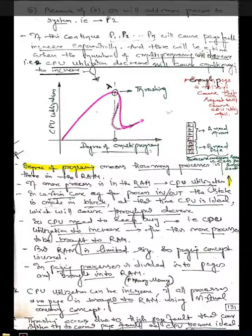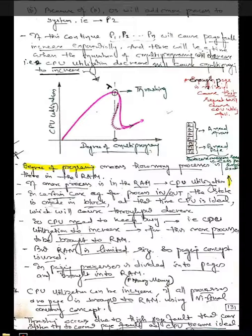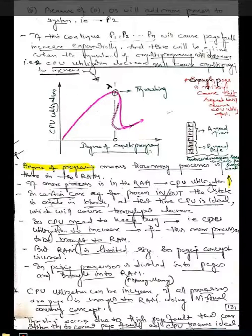As we have discussed in scheduling, how the CPU goes to an idle condition — if the CPU is in an idle situation, thrashing conditions will also occur.